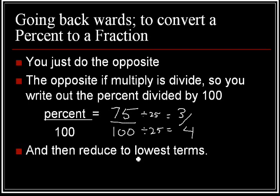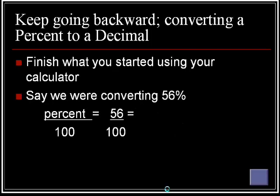Now, just keep going backwards. You want to convert a percent into a decimal, you finish the calculation. Like we wrote it out last time, our first example was percent over 75, so we did 75 over 100, which is the same as 75 divided by 100, which will give you 0.75.